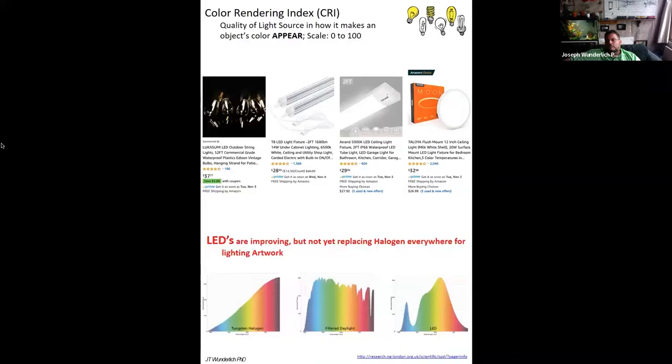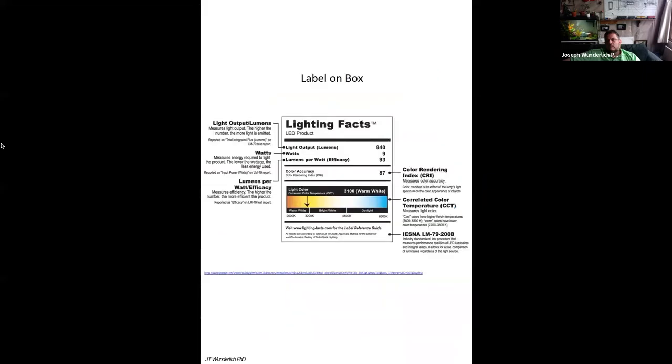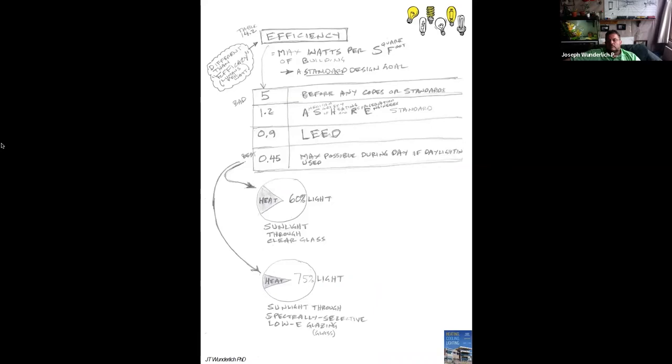Here's what the color rendering index will do for you. You see 100 on the left and then lower 170 on the right, all with the same 2700 Kelvin temperature lighting source. You need to specify that as well. Then you want to be able to understand what you're looking at on the label on the box when you're shopping.